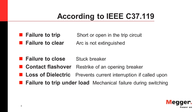Let's start with Failure to Trip. Let's say a relay issues a trip and it energizes the tripping coil for the breaker. But due to some short or open in the trip circuit, or some mechanical problem, the breaker is unable to trip. That is the case when you say it's a Failure to Trip.